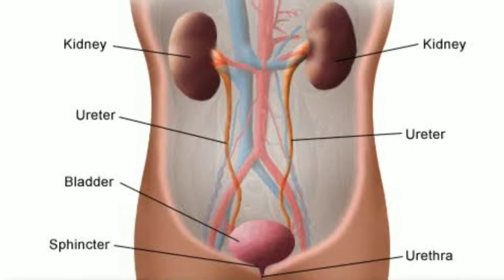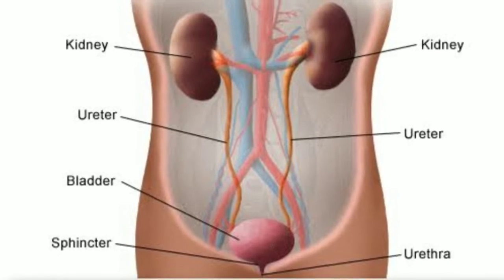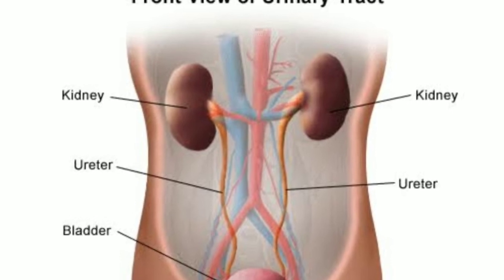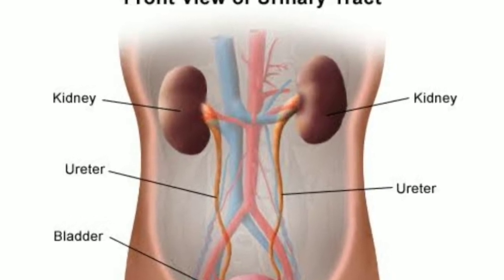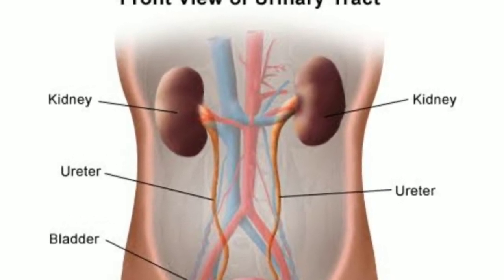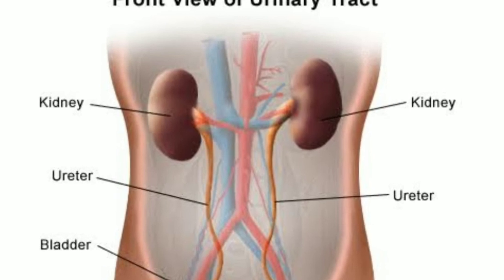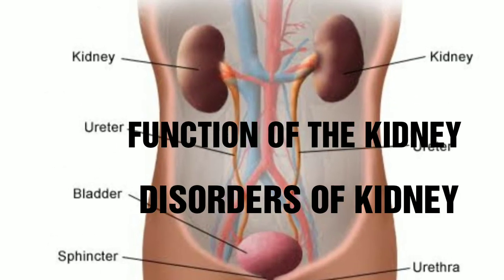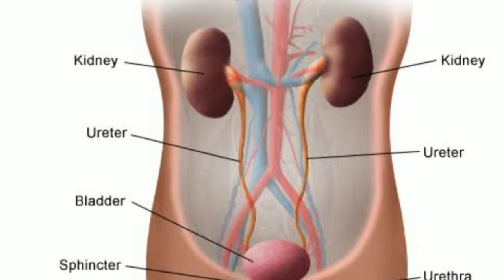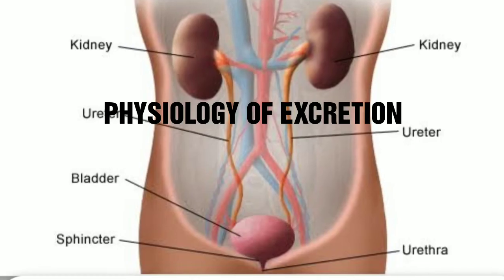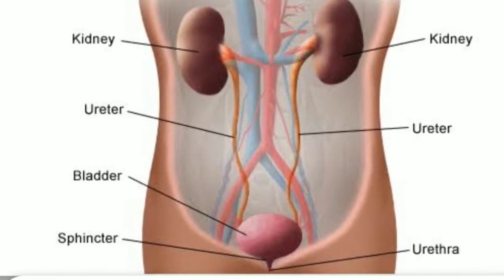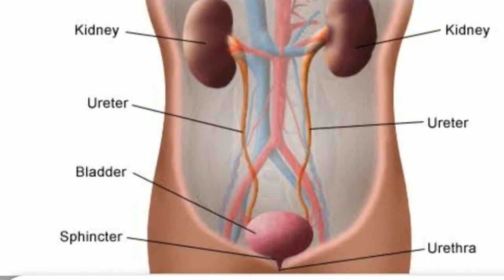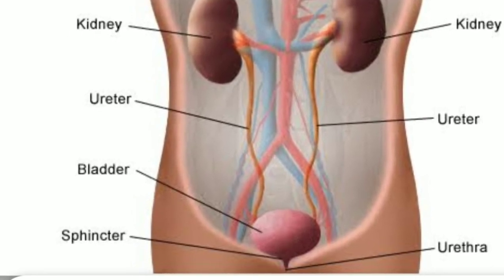With this we complete the structure of all the parts of the excretory system. I hope you have understood the structure of each and every part. In our next class, we will discuss the function of the kidney, the disorders of the kidney, and the physiology of excretion. Thank you, children. Have a great day and take care of yourselves.